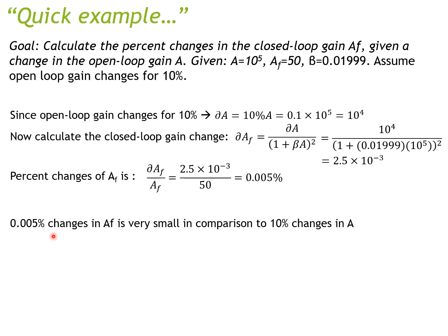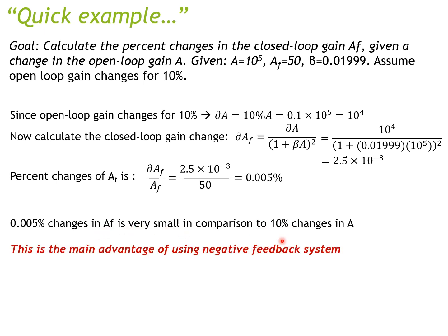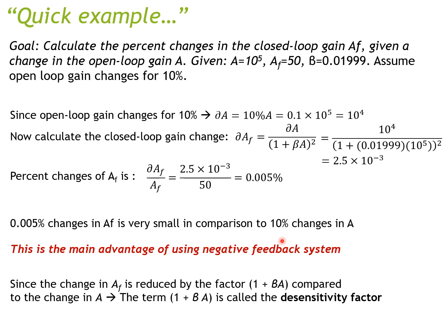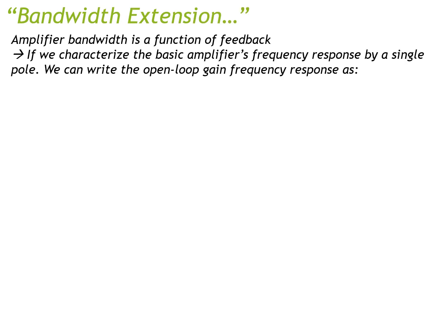A 0.005% change in Af is very very small compared to the 10% change in A. This is the main advantage of using a negative feedback system. The change in Af is reduced by a factor of (1 + βA) compared to the change in A. This term (1 + βA) is sometimes called the desensitivity factor — it reduces the sensitivity of your gain by (1 + βA).